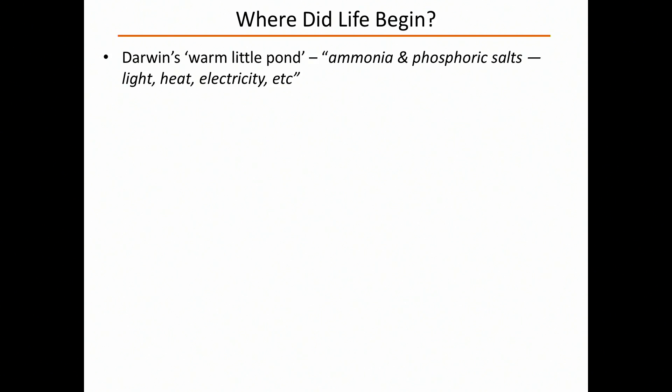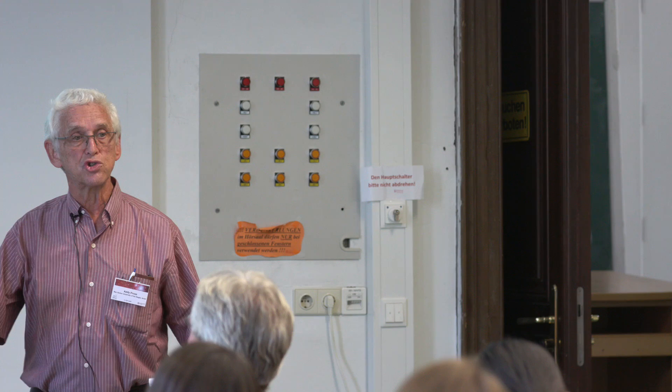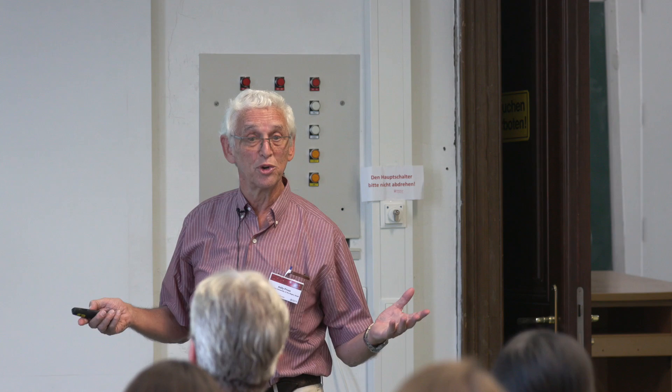A little later in the early 1920s, two scientists — JBS Haldane and Alexander Oparin — said this a little more formally. They called it a primordial soup but spoke about a process of chemical evolution — that chemical stuff evolved in the direction towards life. That was another step in thinking about where it might have happened.